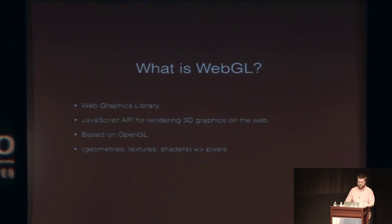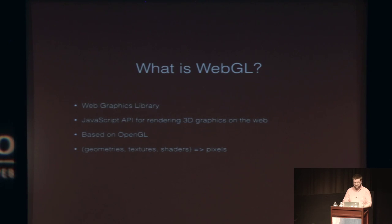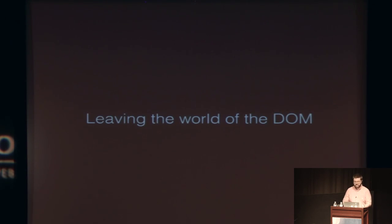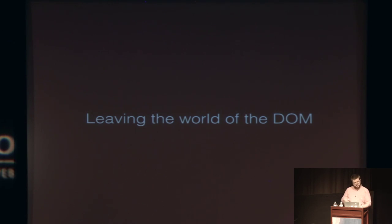A little bit about what WebGL is: it stands for Web Graphics Library. It's basically a JavaScript API that wraps around OpenGL, and you can think of it as a pure function that takes geometries, textures, and shaders, and turns them into pixels that appear on your screen within a canvas element. Once we start working in WebGL, we're going to be leaving the world of DOM — we won't have a lot of the fancy interaction capabilities and positioning qualities the DOM provides. We're reaching much more low level into how a computer actually animates things, and we have to manage our own rendering system.